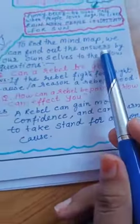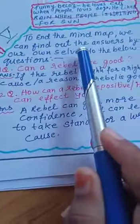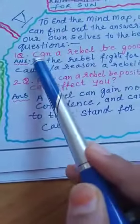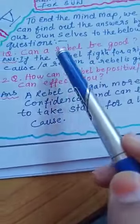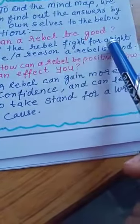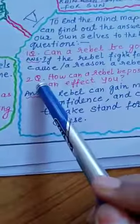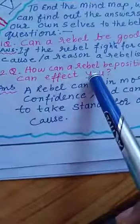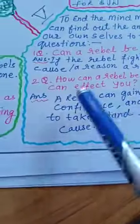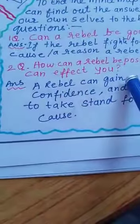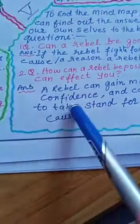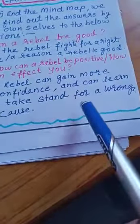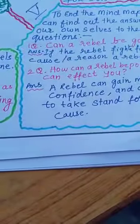To end the mind map, we can find all the answers by ourselves to the questions: How can a rebel be positive, or how can a rebel affect you? A rebel can gain more confidence and can learn to take a stand for a wrong cause.